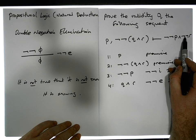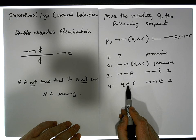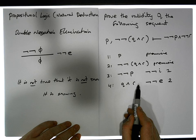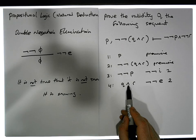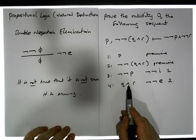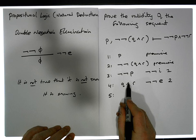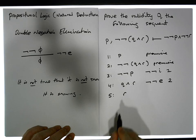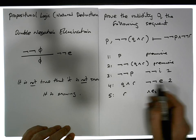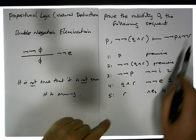We need to release r from this conjunction using AND elimination — in particular the second version, whose consequent is the right operand. So step five: if q ∧ r is true then r must be true, and that is AND elimination version two applied to line four of our proof.